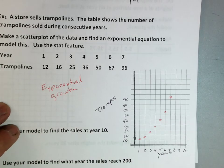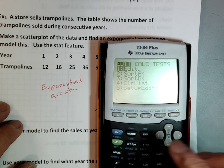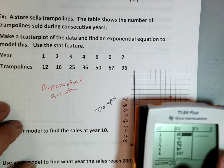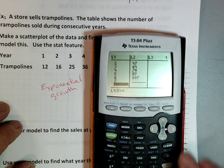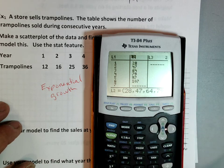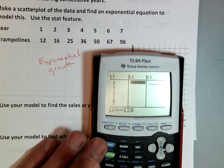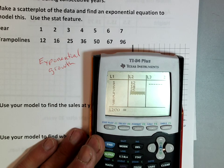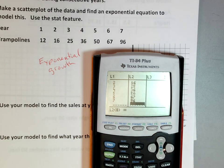I'm going to go to my calculator. I'm going to go to stat and edit. I'm going to go ahead and put in my numbers. So I'm putting in my 12, 16, 25, 36, 50, 67, 96. Got them all in. Am I going too fast? Am I okay?